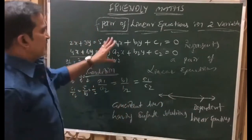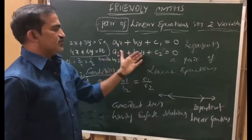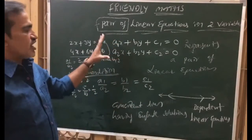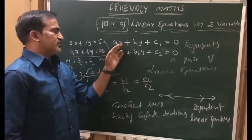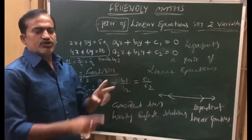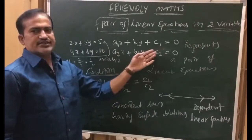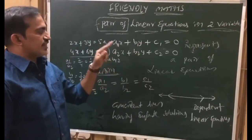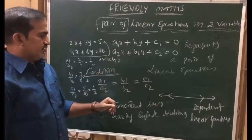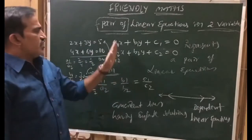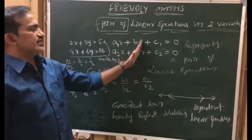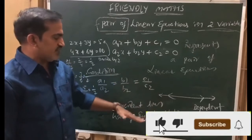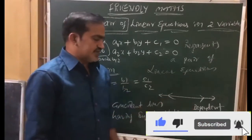Once again: a1x plus b1y plus c1 is equal to 0 and a2x plus b2y plus c2 is equal to 0 represents a pair of linear equations. By observing the coefficients we can decide which type. First, if the ratio of x coefficients and ratio of y coefficients are not equal, they are intersecting lines having unique solution. If x and y coefficient ratios are equal but constant ratios are different, those are parallel lines having no solution. If all three ratios are also equal, they are coincident lines having infinite solutions, also called dependent linear equations.